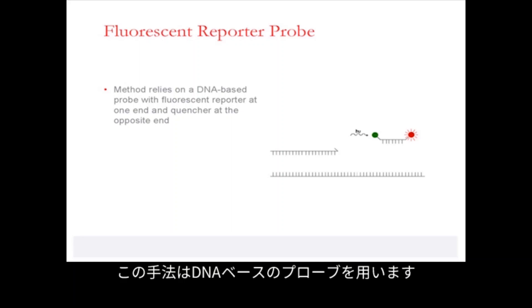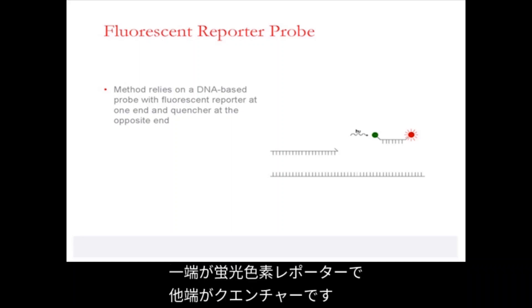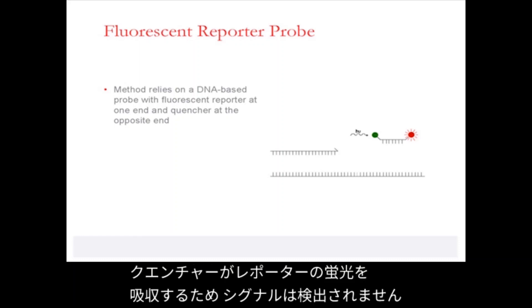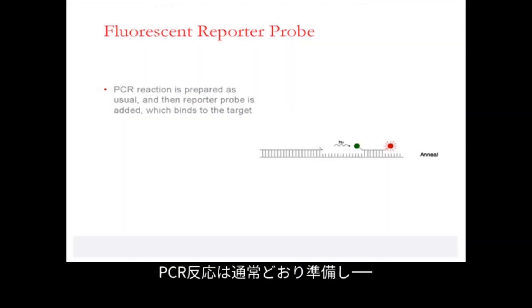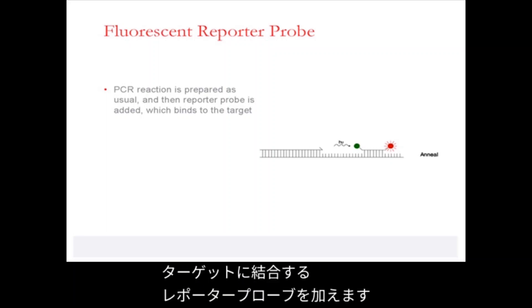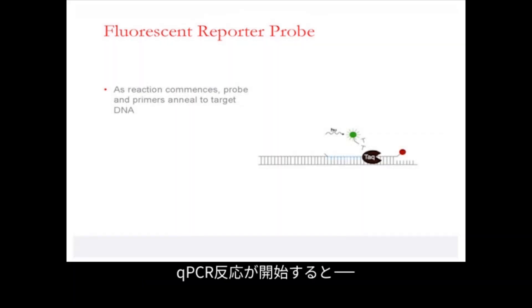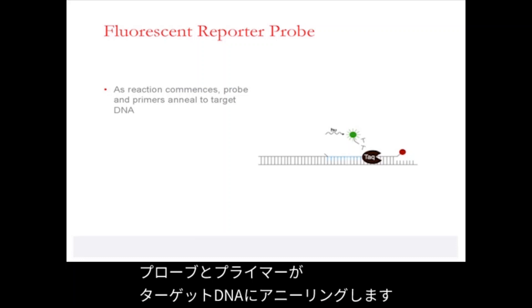The method relies on a DNA-based probe with a fluorescent reporter at one end and a quencher at the opposite end. The quencher absorbs the emission from the reporter, and hence there is no signal detected. The PCR reaction is prepared as usual and the reporter probe is added, which binds to the target. During PCR, the probe anneals to the target region.